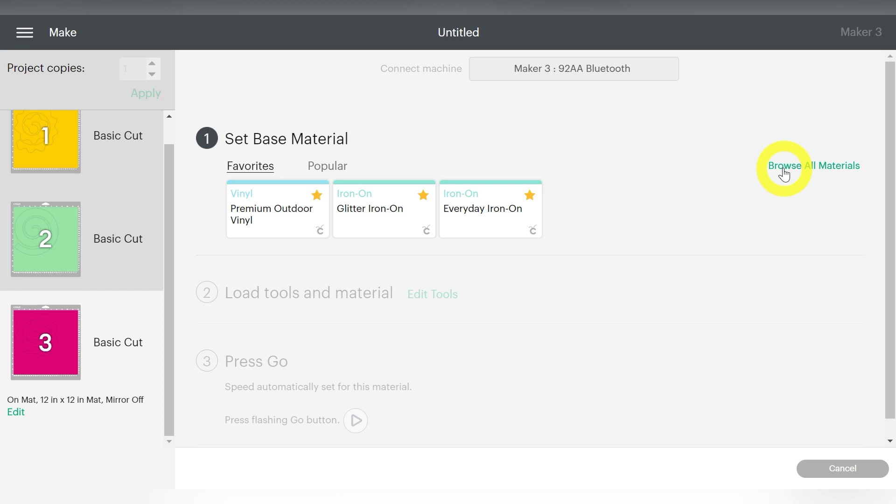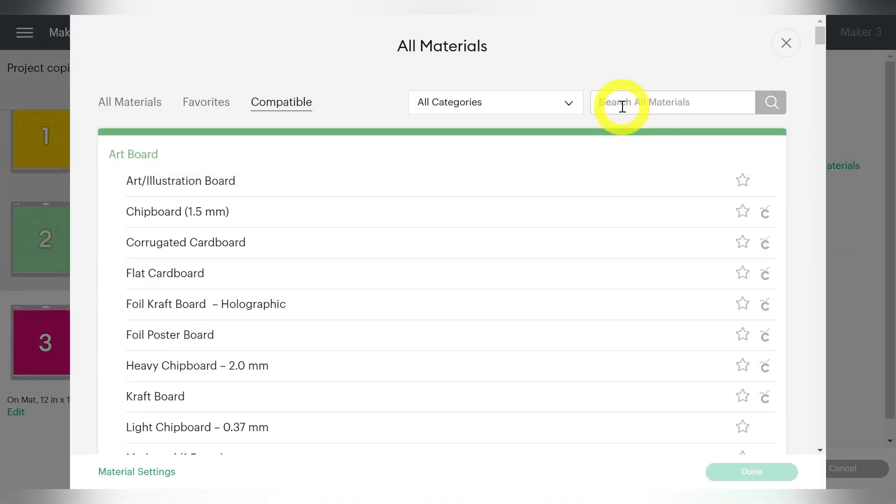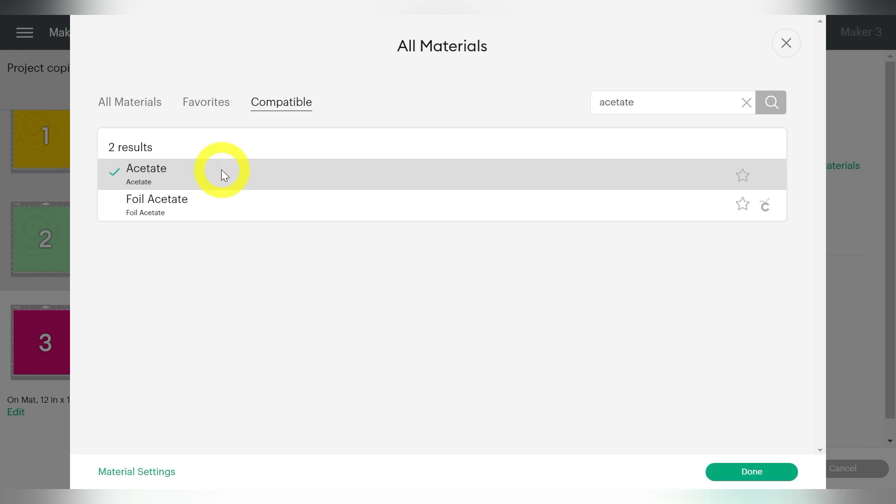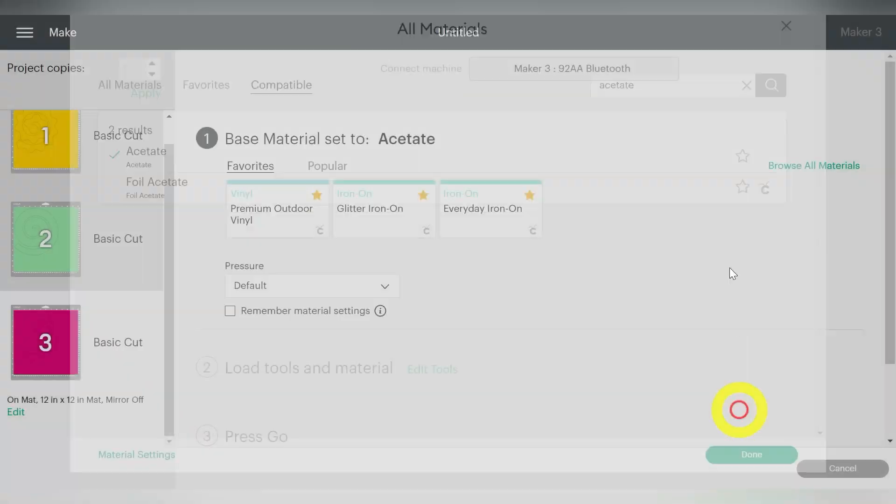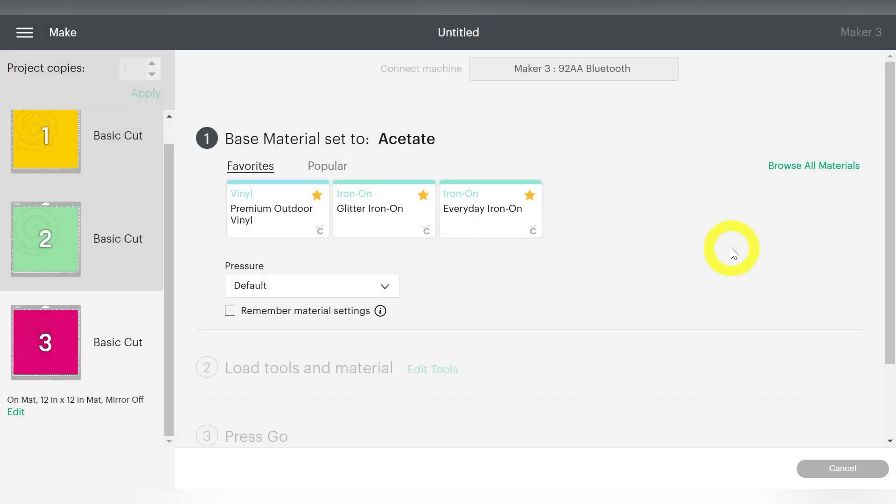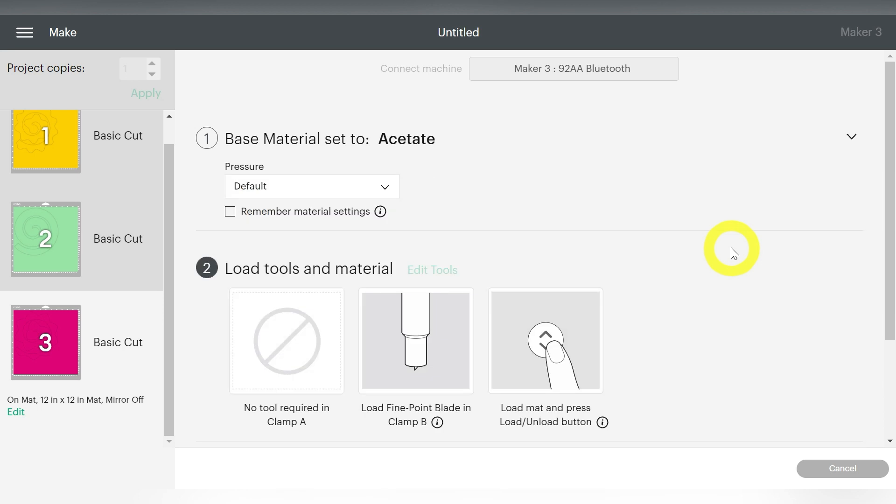Now for my Cricut users, you will see that you have, if you type in Acetate, you have a preset for Acetate right there. So you choose Done, and you can literally go over there and start cutting out your stencils.